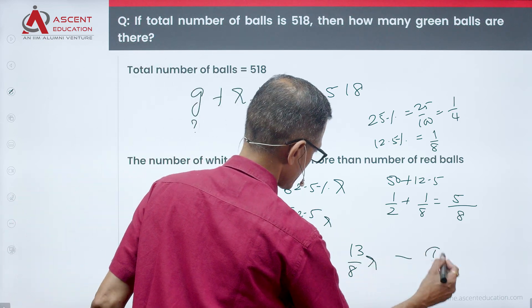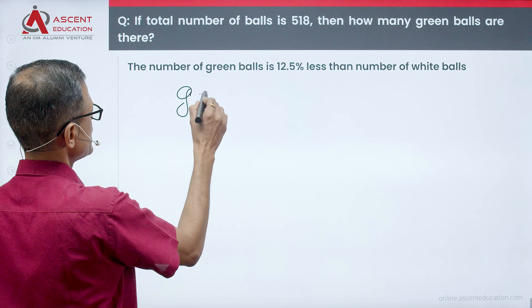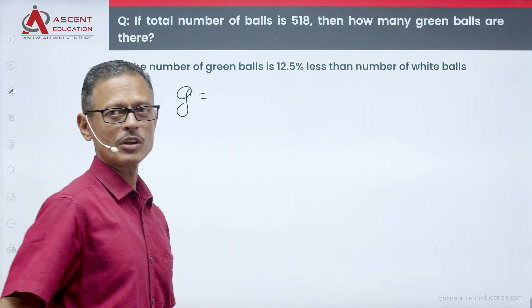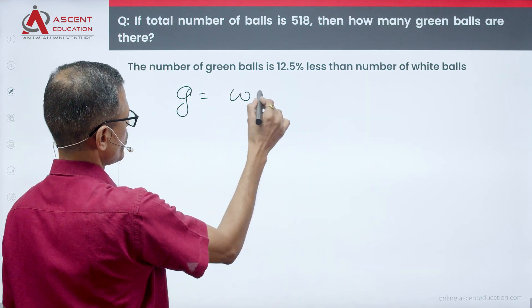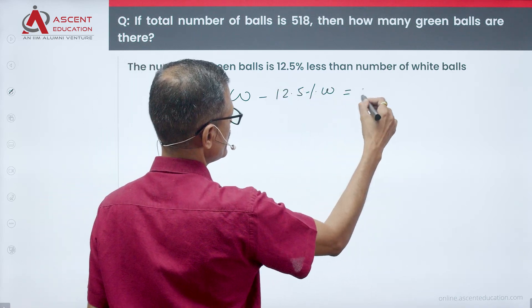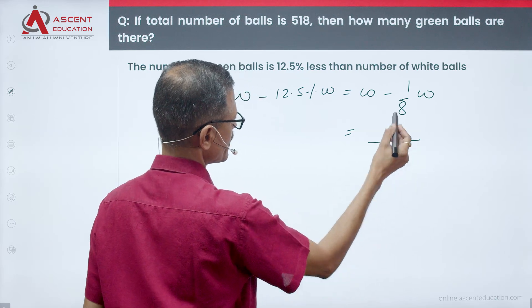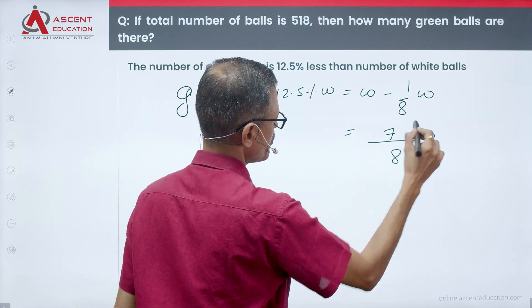Second statement. Number of green balls is equal to 12.5% less than the number of white balls. If you have a white ball, that is 12.5% less. We have said that this is equal to 1 by 8. So, W minus 1 by 8. 8 is a common denominator. 8 minus 1, 7 by 8W.